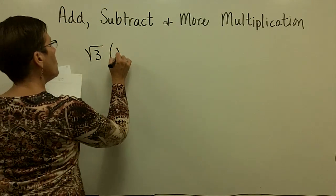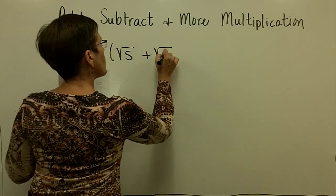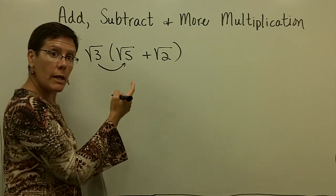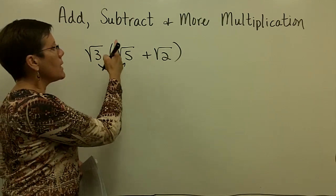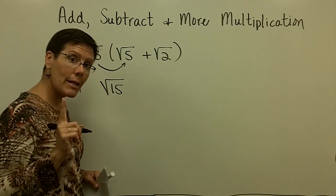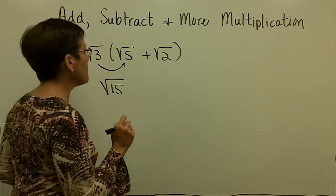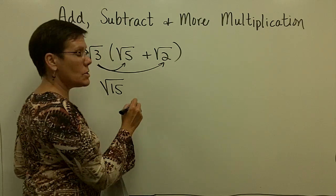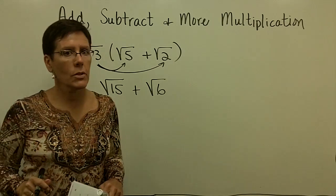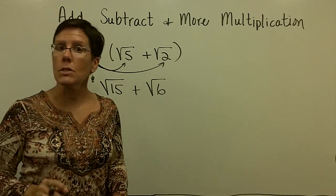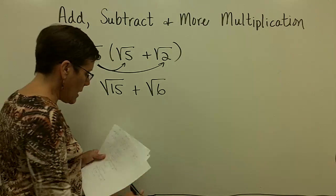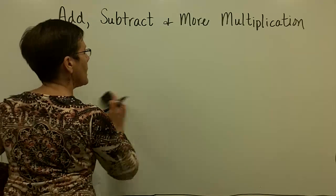Let's see if we can do this without writing down the middle step. Because of the product rule for radicals, the square root of 3 times the square root of 5 is the square root of 15. You've got to keep the radical — it's not like you get to get rid of it. The square root of 3 times the square root of 2 is the square root of 6. The 15 can't be reduced and the 6 can't be reduced, so I will not be able to add those. I have to stop there.